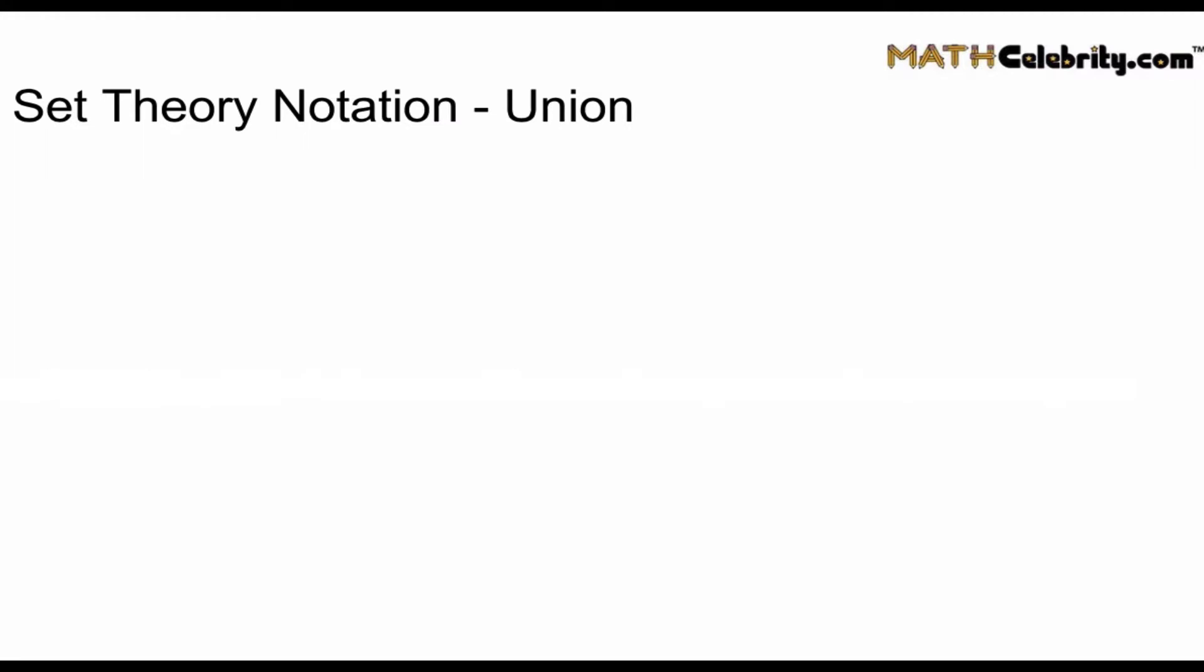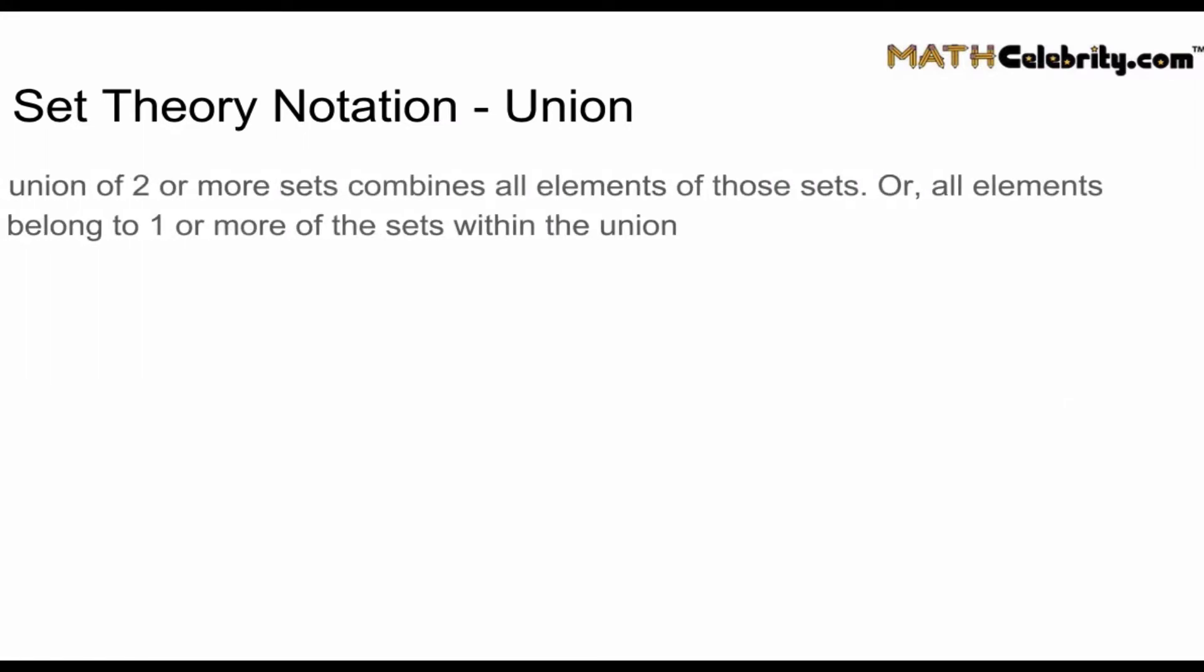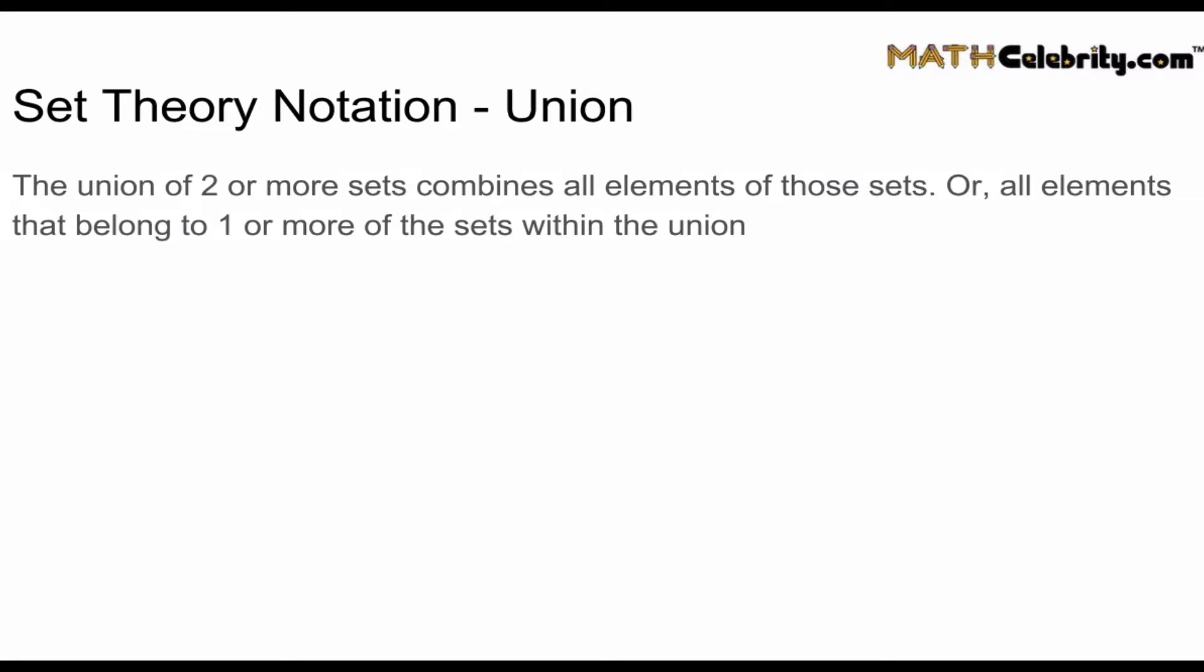Now let's talk about unions of sets. The union of two or more sets, you need at least two sets to have a union, you could have more, combines all elements of all the sets or all elements that belong to one or more of the sets within the union. So let's take two sets A and B. Our notation is A union B, that's how you read that, and we use a capital U symbol to denote a union.